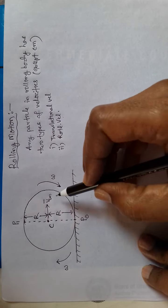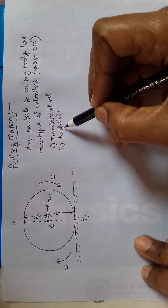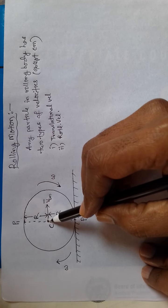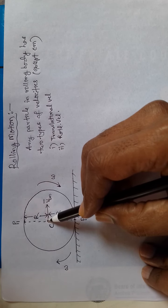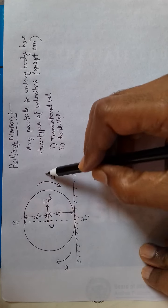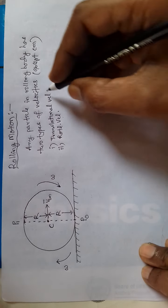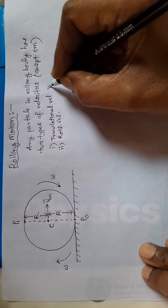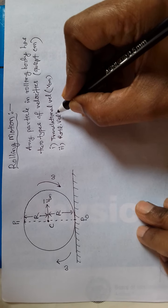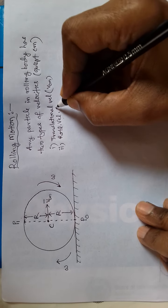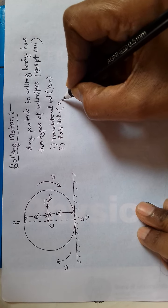Any particle on the disc will have these two velocities except the center of mass. The center of mass will have pure translation only, so it has only translational velocity. Translational velocity is represented by Vcm, and rotational velocity is represented by VR.